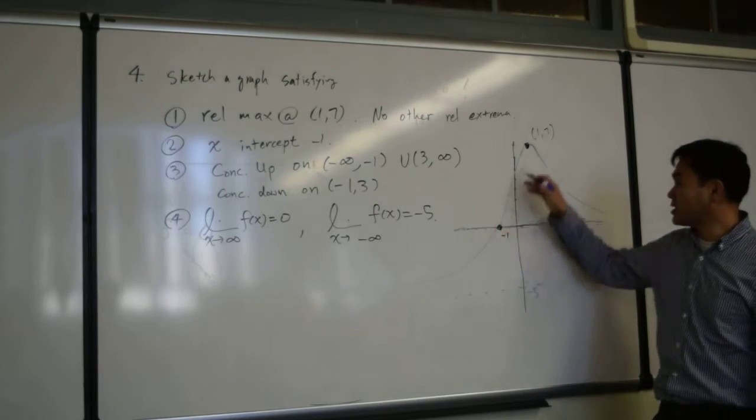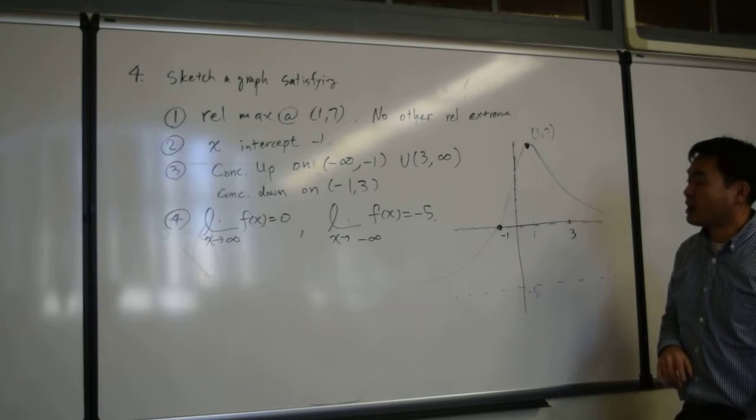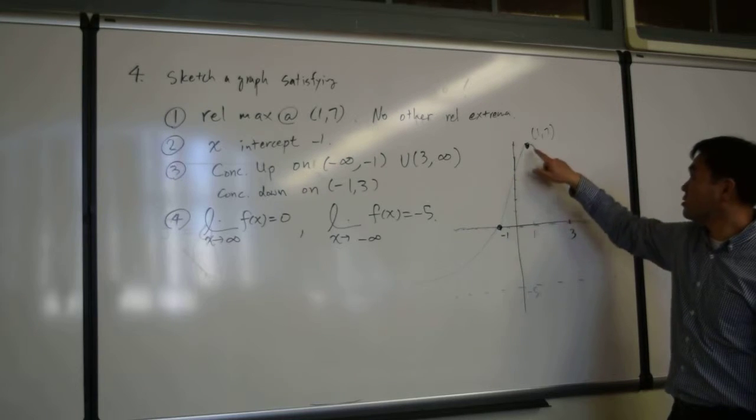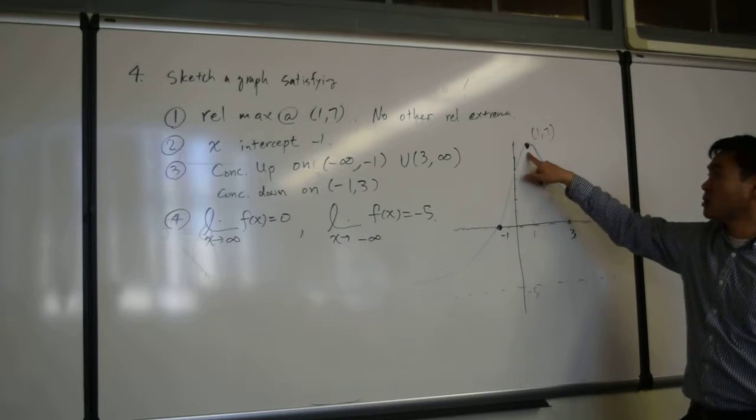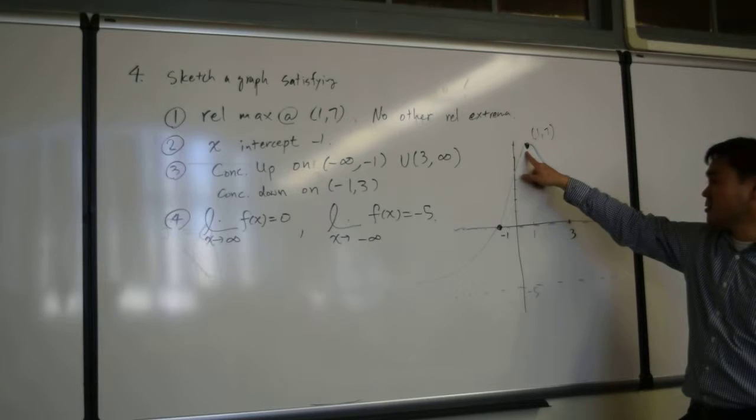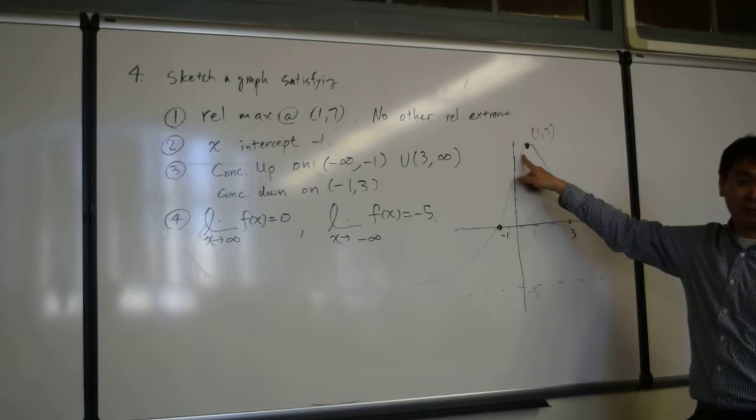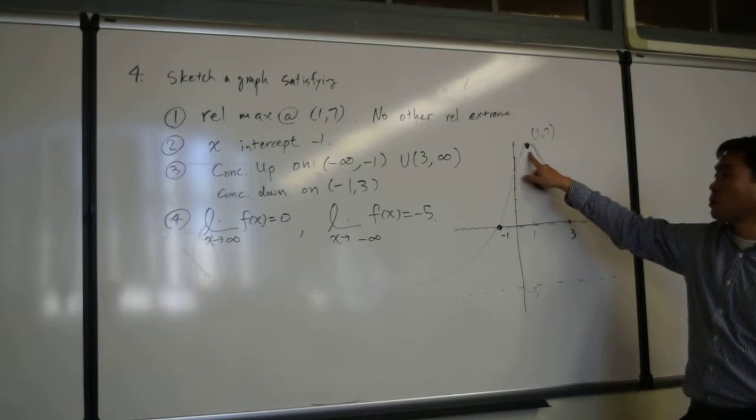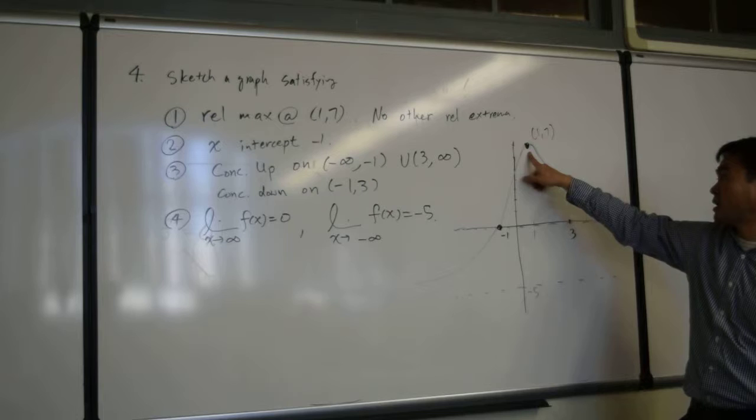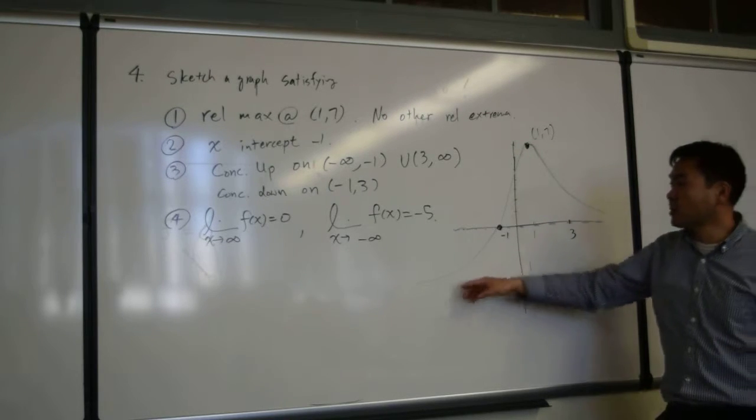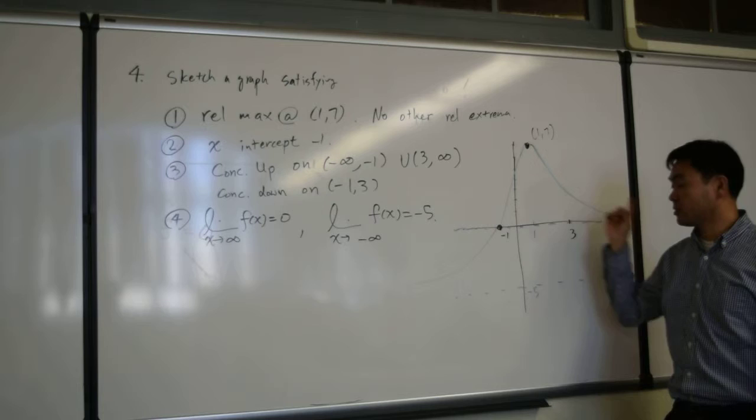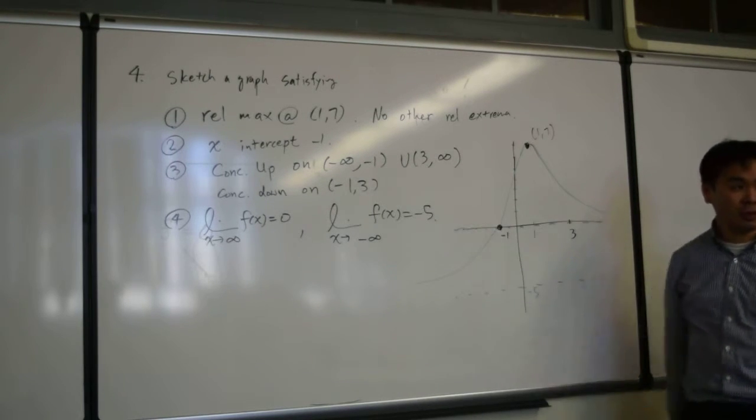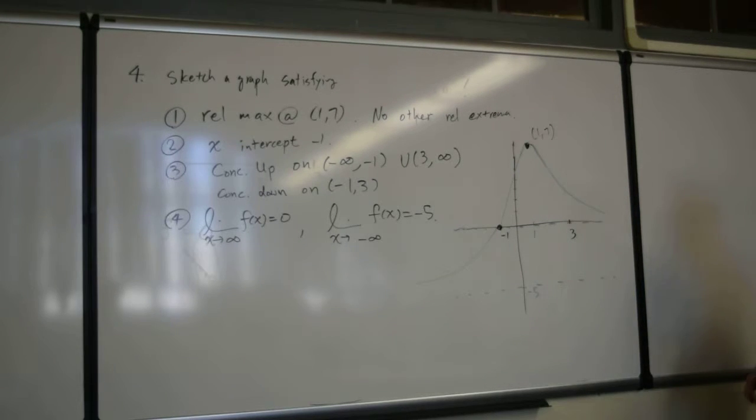This blue line I drew actually satisfies everything except number 3. We didn't consider the concavity. Otherwise, this really is the only relative extreme at 1 comma 7. It also happens to be the absolute maximum. This is both an absolute maximum and relative maximum. It satisfies these limits and passes through negative 1. The only thing it doesn't satisfy is number 3. Let's think about how to manage that.